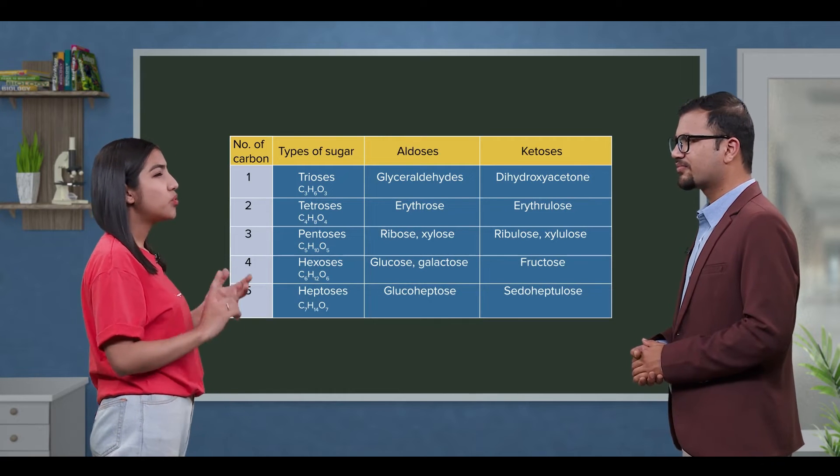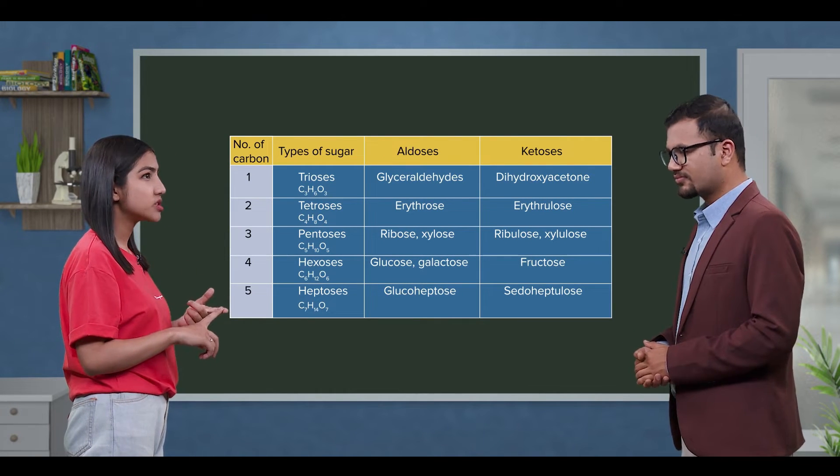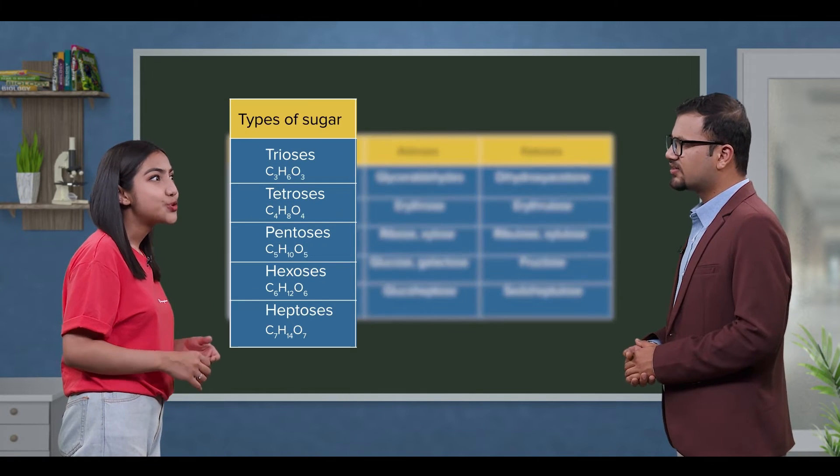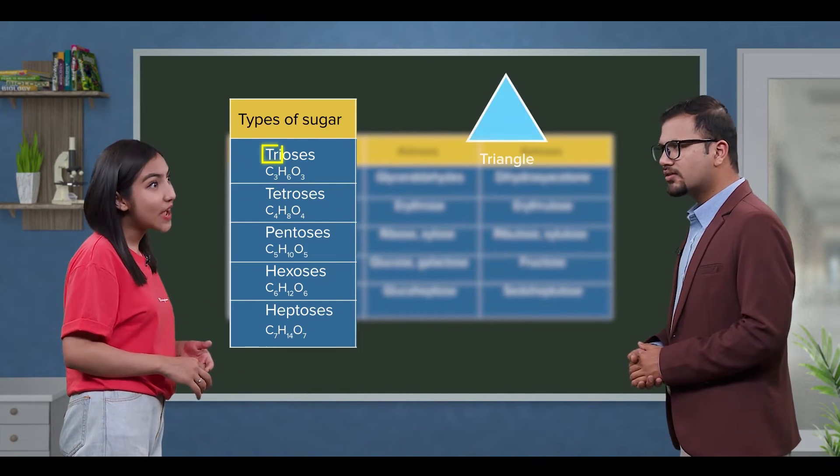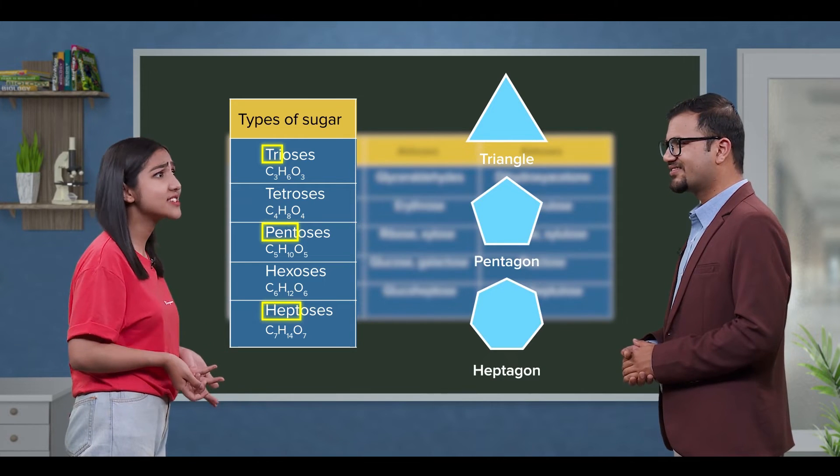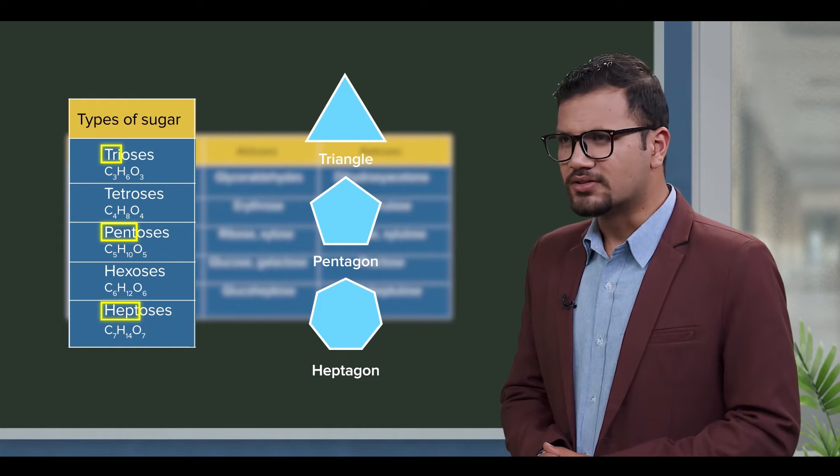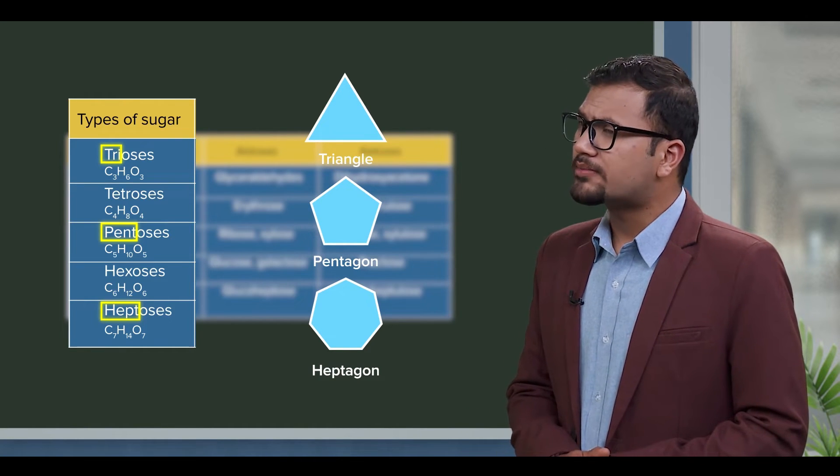In monosaccharides, there are aldoses and ketoses. Teacher, monosaccharides types are like in junior class geometry: triangle, pentagon, heptagon, etc. Good comparison, that's right. You can understand that. And in the table, you know aldose and ketose examples?